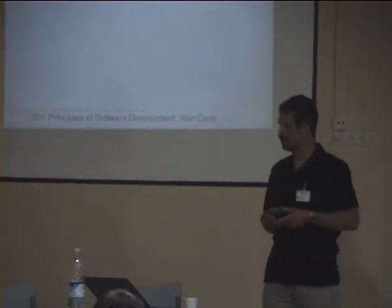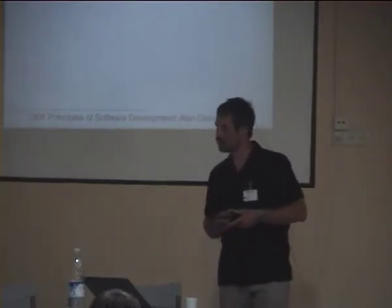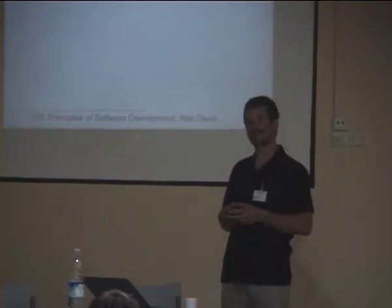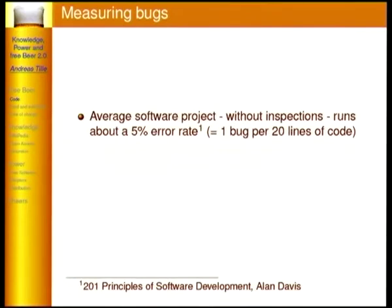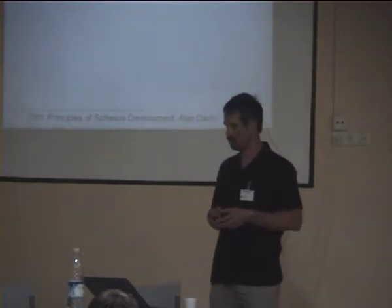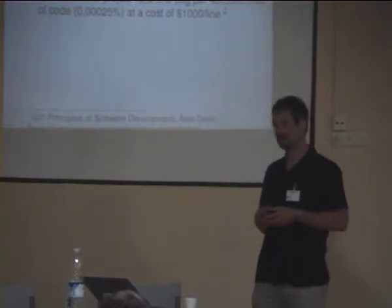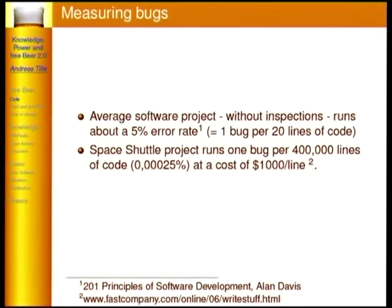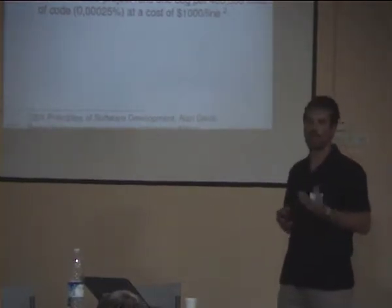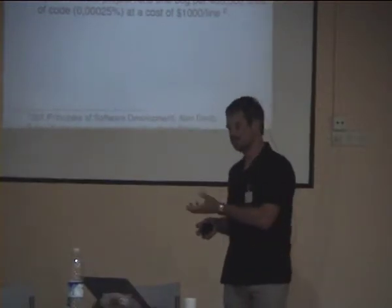An interesting thing about code: an average software project without detailed inspection runs about a 5% error rate — that's 1 bug per 20 lines of code. In nature, errors sometimes drive evolutionary processes, but this is mostly not the case for software. Another interesting number: the Space Shuttle project runs 1 bug per 400,000 lines of code, resulting in a cost of $1,000 per line of code. Code has a high value — you have to pay for it.